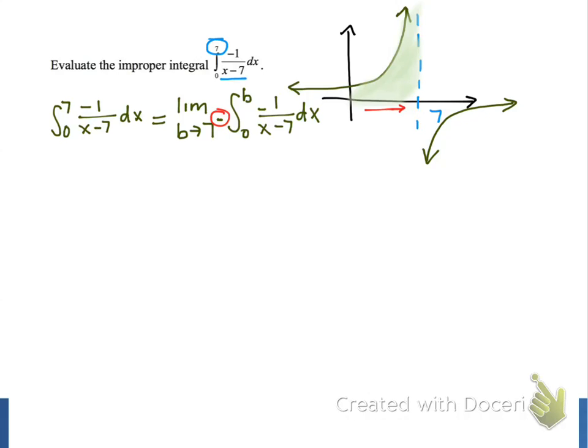Our next step is to find an antiderivative for our function. We will keep the negative 1 constant multiple, and then the antiderivative of 1 over x minus 7 is the natural log of the absolute value of x minus 7, and then we evaluate that from x equals 0 to x equals b.